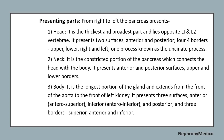The neck is the constricted portion of the pancreas which connects the head to the body. It has anterior and posterior surfaces, and upper and lower borders. The body is the longest portion of the gland; it extends from the front of the aorta to the front of the kidney, and presents three surfaces — anterior, inferior, and posterior — and three borders: superior, anterior, and inferior.